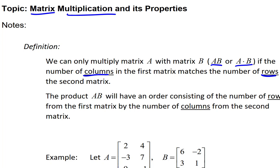Secondly, the product AB will have an order consisting of the number of rows from the first matrix by the number of columns from the second matrix. There are a lot of words in this definition already — it's going to help a lot when we actually look at an example, but these words are true nonetheless.